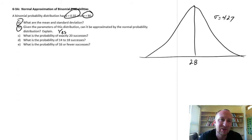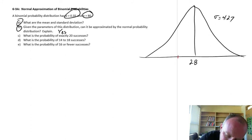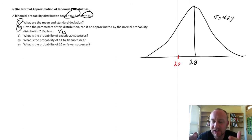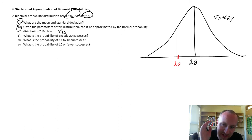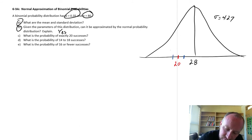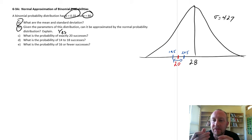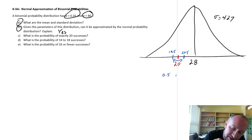So here I'm looking at exactly 20. My value of interest is 20. In order to approximate the discrete probability, we use this continuity correction factor. Instead of looking just at 20 — which would give zero — we look at the interval between 19.5 and 20.5. That gives us an interval of width 1, and that value of 0.5 that we've added is our continuity correction.